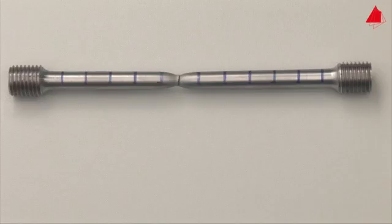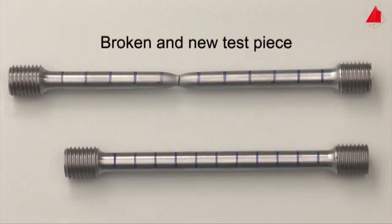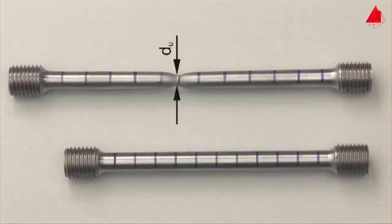With the help of the distance marks, the percentage elongation after fracture can be determined. This is the permanent strain after fracture and amounts to about 30 percent in this example. Please note that the percentage elongation after fracture depends on the length to diameter ratio. By measuring the smallest diameter at the point of fracture, the percentage reduction of area can be calculated. It describes the reduction of cross-sectional area at the point of fracture in relation to the original cross-sectional area.